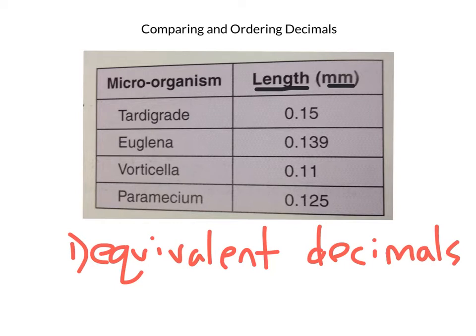You'll notice that the top number has ones, tenths, hundredths — and looking at the others, some have ones, tenths, hundredths, and some have thousandths. In order to make them equivalent, I'm going to give these two numbers thousandths by putting a zero at the end. Now I can compare them because they all have ones, tenths, hundredths, and thousandths place value.